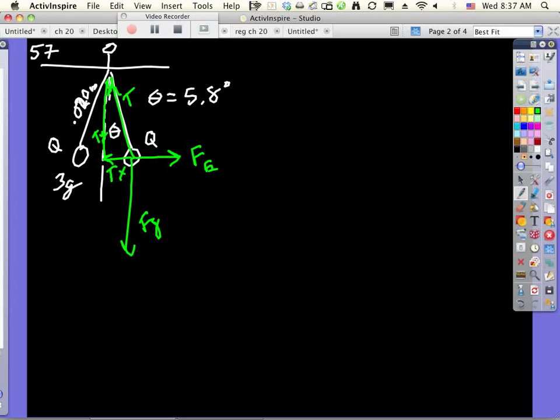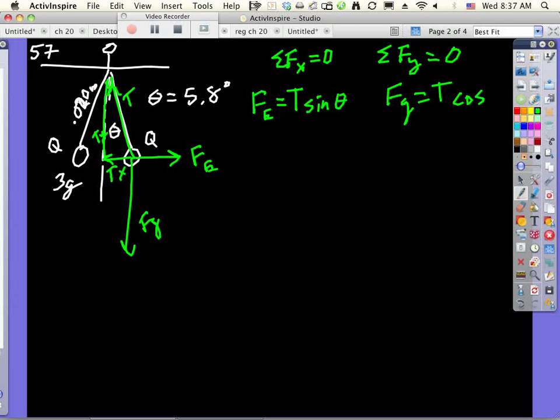So here, once again, sum of the forces in the x and sum of the forces in the y are equal to zero. So I'm going to get Tx which is going to be T sine θ, Fg is going to be T cos θ. It's exactly what we just did. We get Fe equals tan θ, and in this